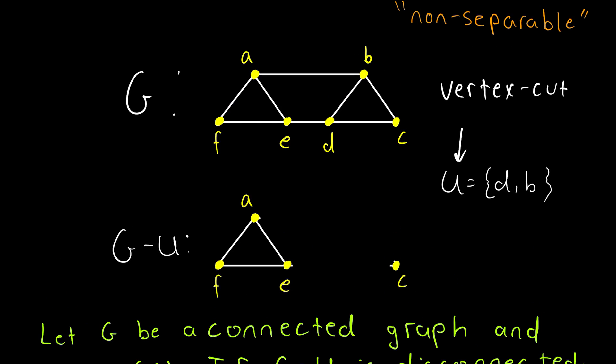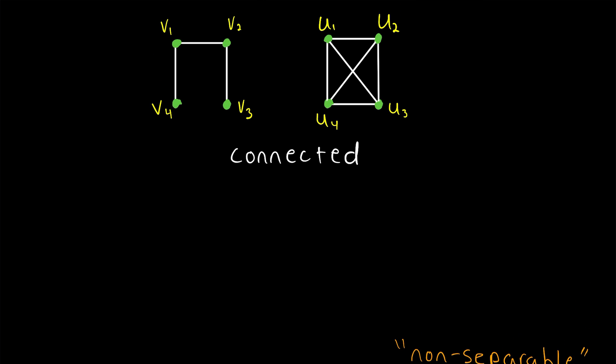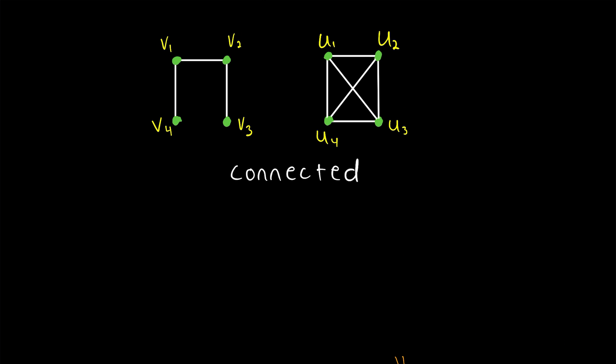So for an example of that, if we look back up to the first graph we were looking at, we saw that we could disconnect this graph by deleting a single vertex. We could also, if we wanted to, disconnect it by deleting two vertices. So V4 and V2 make up a vertex cut of this graph. However, it's not a minimum vertex cut, because like we saw, we only need to delete one vertex to disconnect the graph.